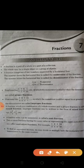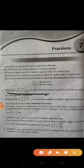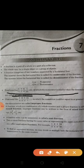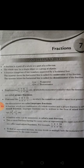Fractions like 1 upon 3, 3 upon 7, 5 upon 8, 7 upon 11, etc., in which the numerator is smaller than the denominator, are called proper fractions. If the numerator is smaller than the denominator, then these types of fractions are called proper fractions.